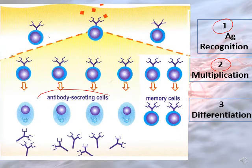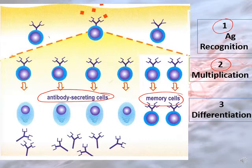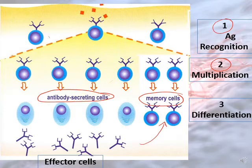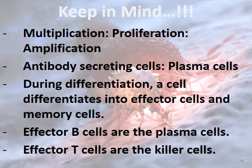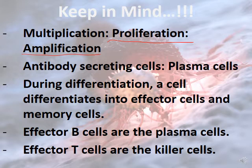During differentiation, cells either differentiate into antibody-secreting cells, which become the effector cells, or into memory cells. Antibody-secreting effector B cells are called plasma cells. So the mature effector B cell that is able to secrete antibodies is called a plasma cell.